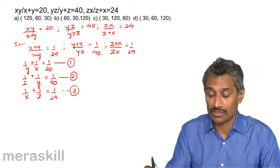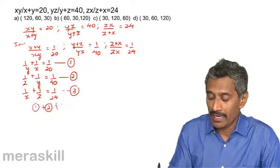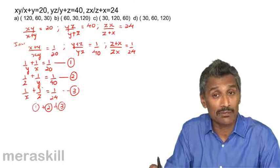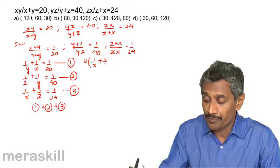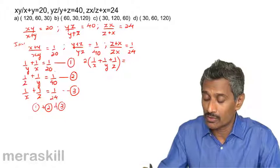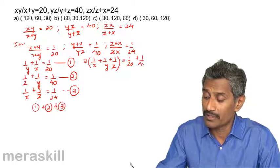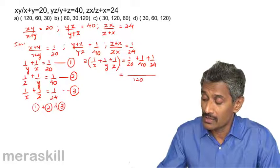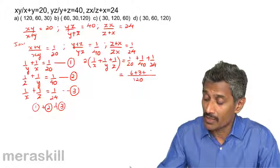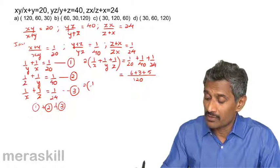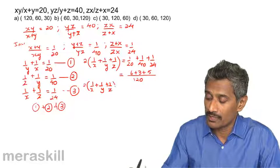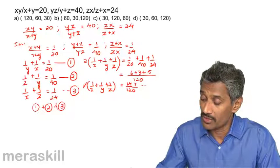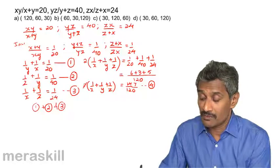We get three equations and now need to work on them. If you add equations 1, 2, and 3, you end up getting 1/y + 1/y = 2/y, 1/x + 1/x = 2/x, and 1/z + 1/z = 2/z, which can be written as 2(1/x + 1/y + 1/z) = 1/20 + 1/40 + 1/24. Taking 1/120 as common, you get 6 + 3 + 5, so 2(1/x + 1/y + 1/z) = 14/120 = 7/60. Hence 1/x + 1/y + 1/z = 7/120.